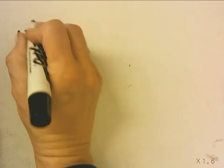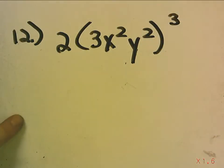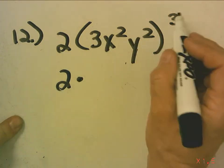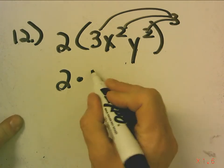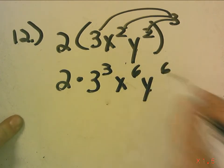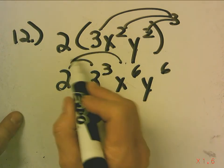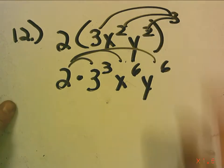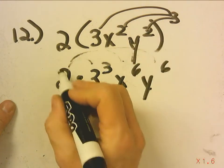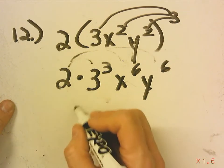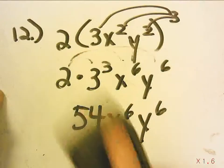Number 12: 2 times 3x squared y squared, cubed. The 2 I will save for last — times 3 cubed, x to the sixth, y to the sixth. Now this is where some people get confused: do you think you have to distribute the 2 to each term? The answer is no, because you only distribute over a sum or a difference. So this is just saying do 2 times 3 cubed. 3 cubed is 27, times 2 is 54, x to the sixth, y to the sixth. You do not distribute with multiplication — you only distribute over a sum or a difference.